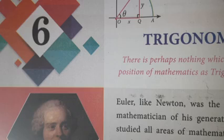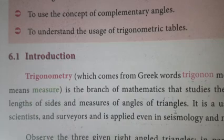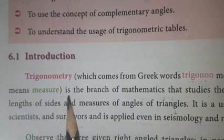Today we are going to see a new chapter, Chapter 6: Trigonometry. Trigonometry comes from Greek words — 'trigon' means triangle and 'metron' means measure. It is the branch of mathematics that studies the relationship involving length of sides and measure of angles of a triangle. It is a useful tool for engineers, scientists, and surveyors.